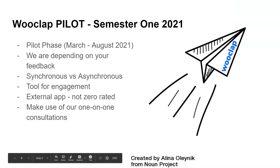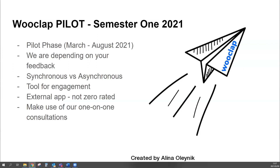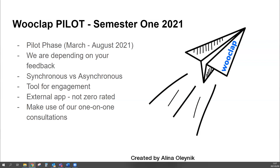I just wanted to talk a little bit about the pilot phase of WooClap. We are currently running WooClap as a pilot tool in semester one of 2021, running from March to August. The continued use of WooClap depends on your feedback — we're hoping to get feedback from both lecturers and students about how effective the tool was. Don't be surprised if we come knocking to ask for feedback. WooClap can be used both synchronously and asynchronously — the synchronous mode is called voting mode and the asynchronous mode is participant pace.